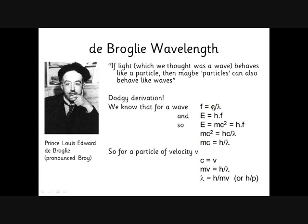Let's substitute in c over lambda for f, so we get mc squared equals hc over lambda. Cancel out as c, we get mc equals h over lambda. So this is all true for waves, so if we take a particle with a velocity of v, we just make the speed of the particle equal to v instead. So we get mv instead of mc equals h over lambda. Rearrange that, we get lambda equals h over mv.